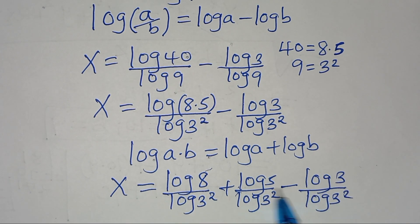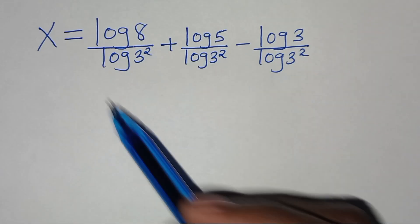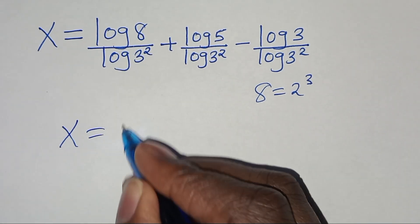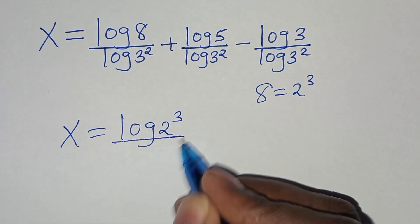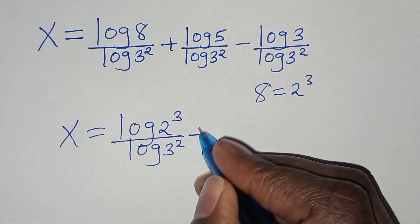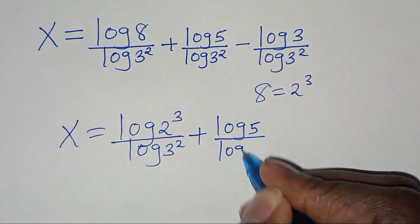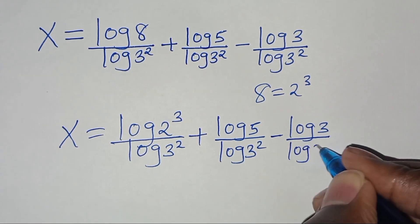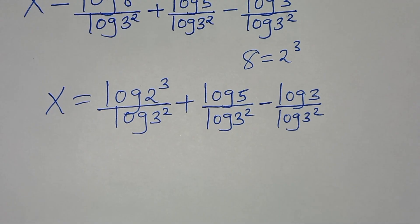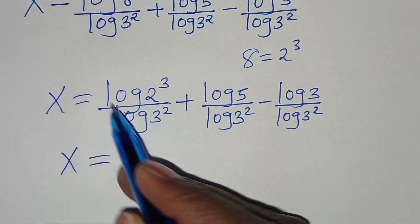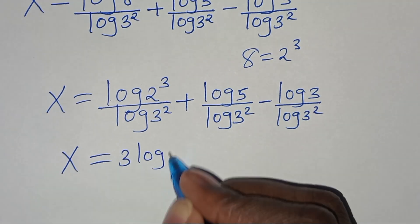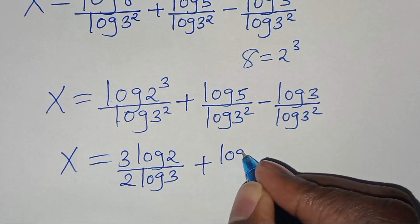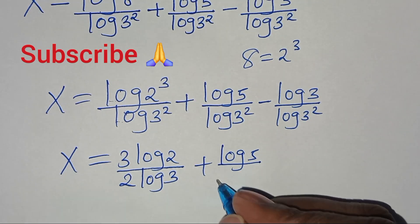From here, we can express 8 as 2 to the power 3. So x is equal to log of 2 to the power 3 divided by log of 3 to the power 2, plus log 5 divided by log of 3 to the power 2. Applying the power rule, log of 2 to the power 3 becomes 3 log 2, and log of 3 to the power 2 becomes 2 log 3. Similarly for the other terms.